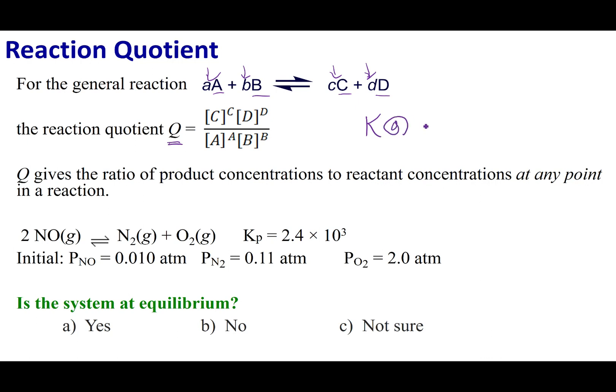K is always at equilibrium, whereas Q is used as an assessment tool. We can evaluate the reaction at any point in the reaction, whether it's at the start or at equilibrium or anywhere in between. The purpose of Q is to tell me, am I at equilibrium? And if I'm not at equilibrium, how will the reaction shift so it can get to equilibrium?